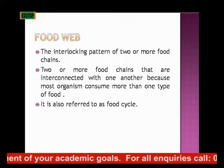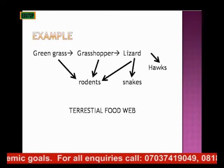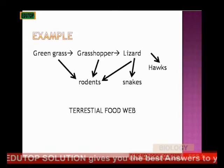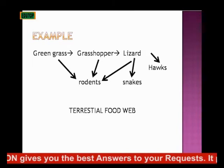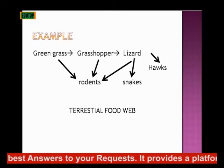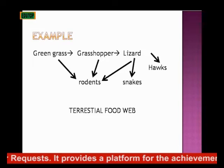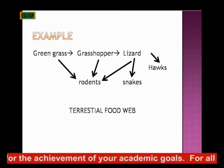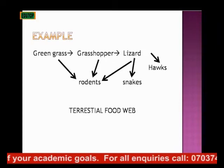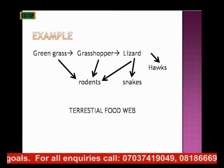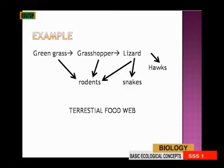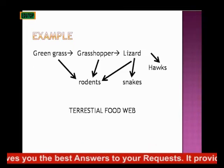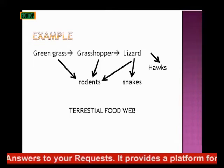Look at this example of a terrestrial food web. Green grass is eaten by the grasshopper, then the lizard eats the grasshopper, and the owl eats the lizard. Rodents also eat green grass and the grasshopper. Snakes eat the lizard. So you have interlocking chains — rodents eat green grass, grasshoppers, and the hawk. Snakes eat the lizard. You can see two or three food chains interlocking here, making this an example of a terrestrial food web.